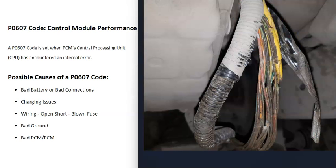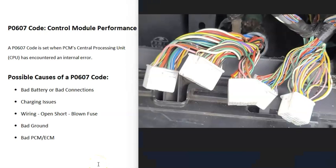The next thing that could cause this is some kind of issue with the wiring — something like an open, a short, or a blown fuse. If you can locate your PCM or ECM, check out all the wiring going to it and see if anything looks damaged. If you don't see any physical damage, you can get a schematic for your particular vehicle and start checking all the wiring for any open shorts, bad connections, or anything like that.